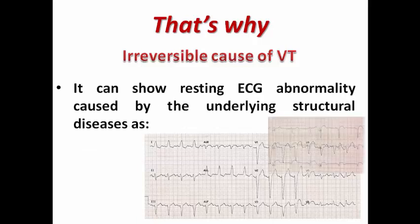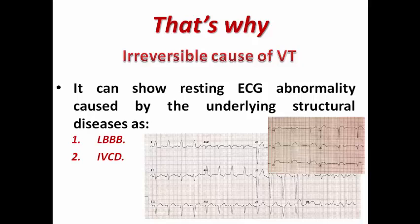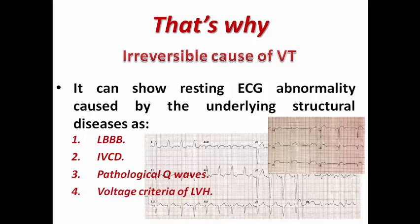Serial ECG and cardiac biomarkers will be static with no dynamic ECG changes or rise or fall in cardiac biomarkers. The baseline ECG after cardioversion can show resting abnormalities caused by the underlying structural heart disease, such as left bundle branch block, interventricular conduction delay, pathological Q waves according to the affected territory, or voltage criteria for left ventricular hypertrophy — these ECG features suggest the underlying structural heart disease.